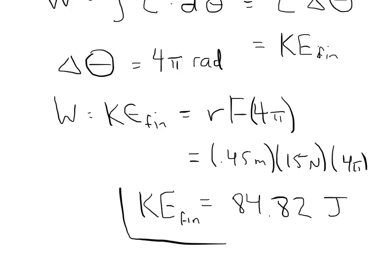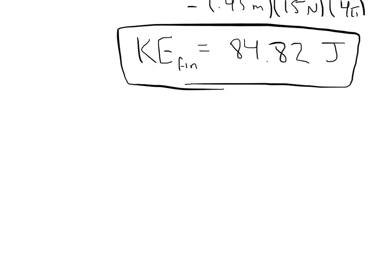The second part of the problem is, how fast is the wheel rotating? We can say the final kinetic energy is equal to, because it's purely rotational, one-half I omega squared. I is the moment of inertia. Omega is the angular velocity. For a wheel, which has all of its mass concentrated on the outside, the moment of inertia is just mr squared. That means the final kinetic energy is equal to one-half quantity mr squared times omega squared.